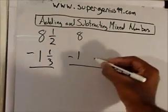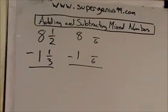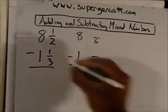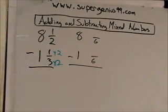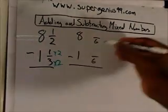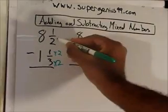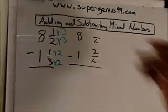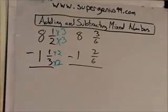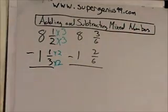So I just got to ask myself, okay, three times what gives us six? That's two. Okay. So I got to multiply one times two. So one times two is two. And then two times what gives you six? Well, that's three. Okay. So I need to multiply the top by three. So what is one times three? Okay. So that's three.